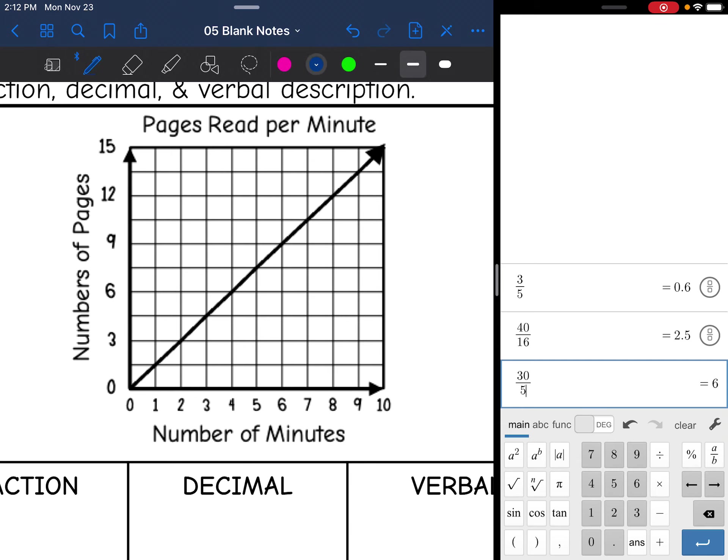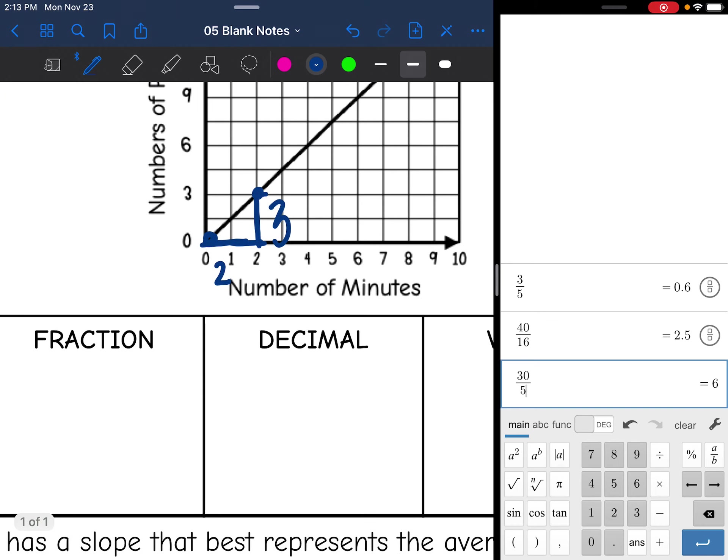Let's go ahead and find the fraction or the rise over the run. You can use any two points. All of the line is going through perfect corners. I'm going to use these two points because now I know that this rise is from 0 to 3. So it is 3. And then my run is from 0 to 2, which is 2. So the fraction version of the slope here, or the unit rate, is 3 over 2.